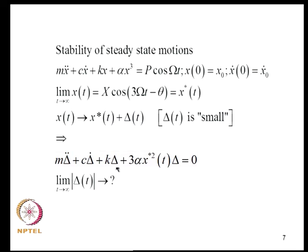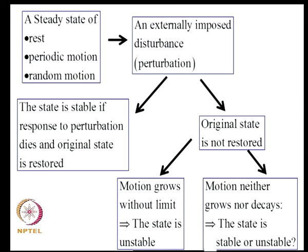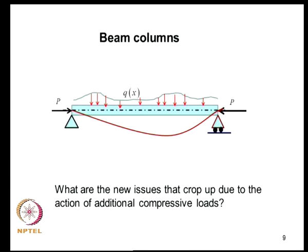We consider the steady-state response of systems — which could be a state of rest, periodic motion, or even random motion — and impose an external perturbation. The state is stable if the response to perturbation dies out and the original state is restored. If the original state is not restored, either the motion grows without limit (unstable) or neither grows nor decays (question unresolved). As we go along we will get familiar with some of these issues.